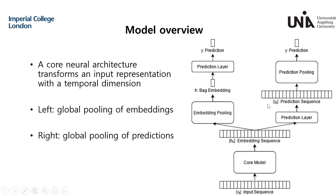The multiple instance learning framework that all competing methods follow works as follows: a core neural architecture transforms an input representation with a temporal dimension into a sequence of learned embeddings, each representing a part of the input clip. Then either we pool these embeddings into a single global one and process that to get prediction probabilities, or we get a sequence of prediction probabilities that we then pool.